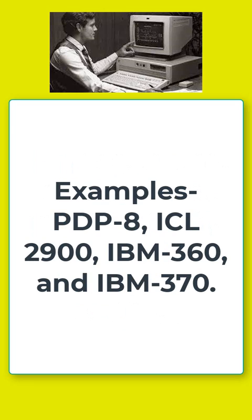Apart from that, if we talk about the examples of third generation computers, they include PDP, AID, ICL 2900, IBM 360, and IBM 370.